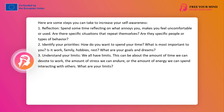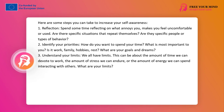2. Identify your priorities: How do you want to spend your time? What is most important to you — is it work, family, hobbies, rest? What are your goals and dreams? 3. Understand your limits: Everyone has their own limits. This could refer to the amount of time you can devote to work, the amount of stress you can handle, or the amount of energy you can give to interacting with others. What are your limits?